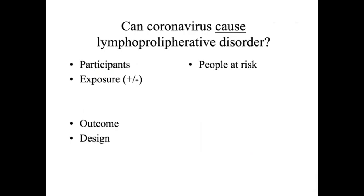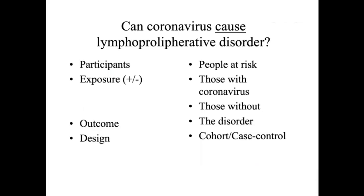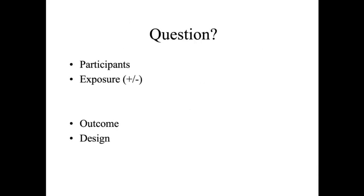For example, in the coronavirus pandemic: do people exposed have a risk of lymphoproliferative disorder? The exposure is a PCR test — positive or negative for coronavirus. The outcome is the disorder confirmed by laboratory tests like histology. The design could be cohort or case-control. We can identify people with lymphoproliferative disorder and a healthy control group, then go back in time to see if they were exposed to coronavirus by presence or absence of a positive PCR test result.